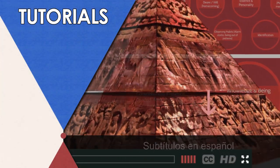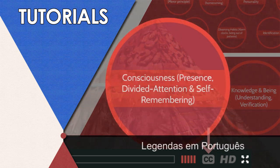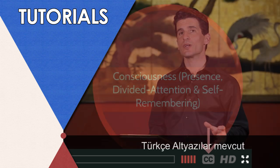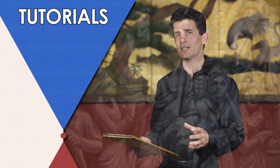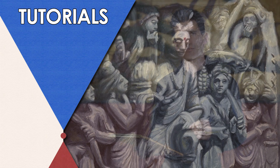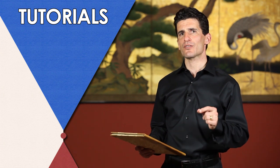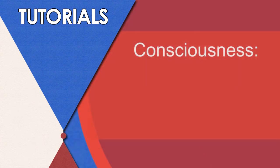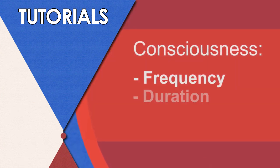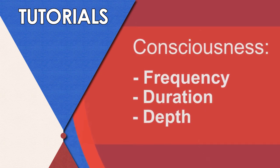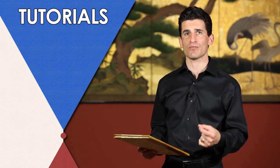Welcome to the tutorial on Consciousness, the first topic on the first step of the Pyramid. In this tutorial, we will begin by defining consciousness, because it can mean many different things in many different teachings. Then we will examine how consciousness is portrayed visually in a Buddhist teaching, the story of the life of Prince Siddhartha. We will then use that story to formulate the three parameters by which consciousness is measured: frequency, duration and depth. And we will end the tutorial by setting an exercise that will help us increase the frequency of our consciousness.